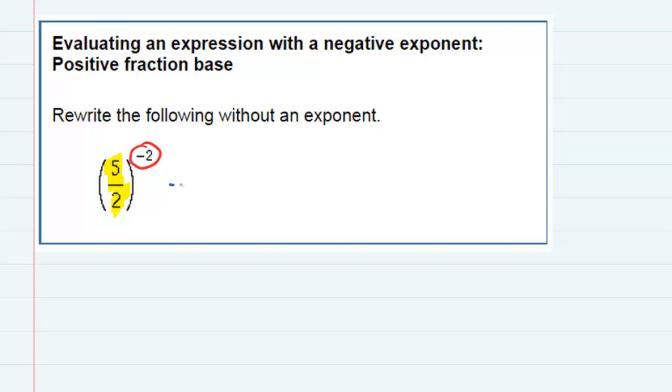And the way that we do that is we can make this from a negative 2 into a positive 2 as long as we flip the fraction that is inside. So that 2 is going to go to the top and the 5 is going to go to the bottom.